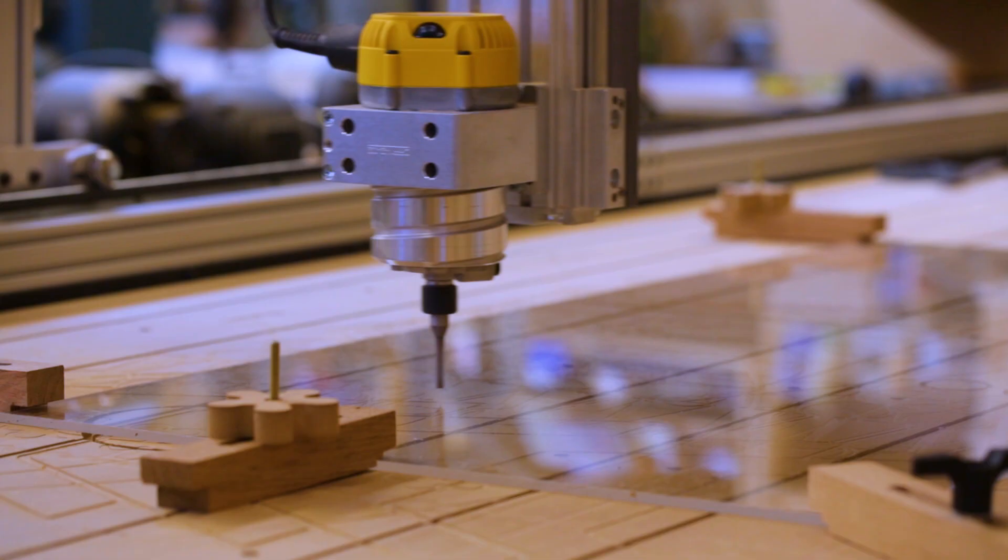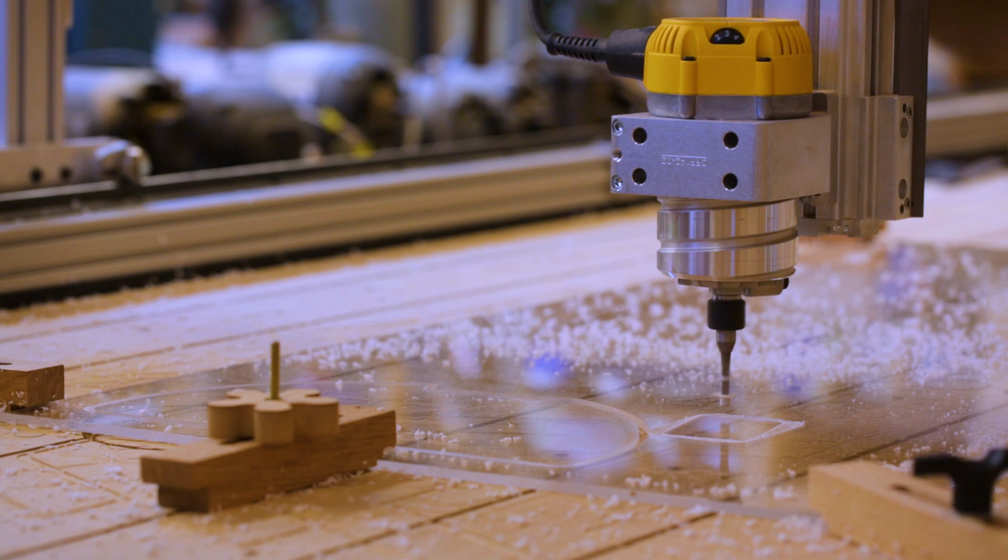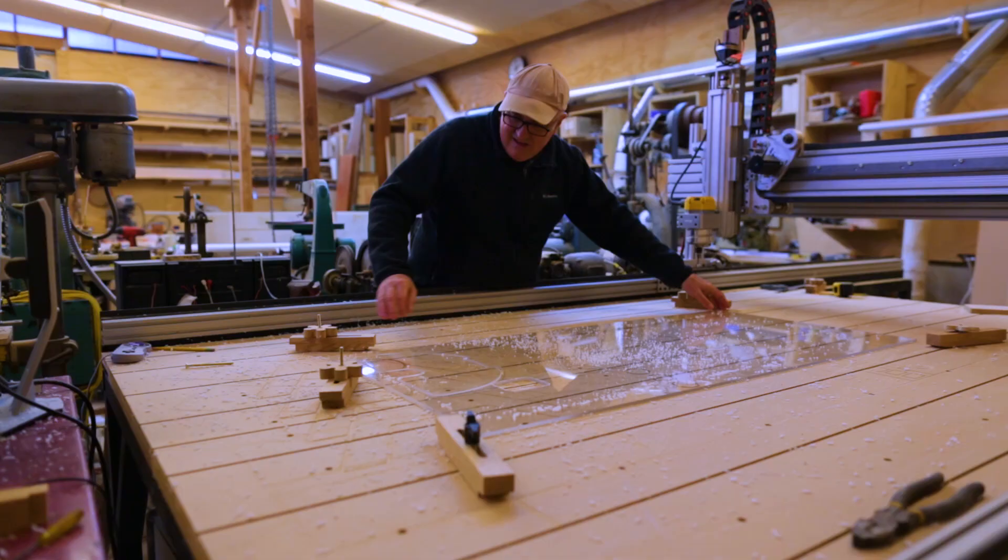Once I had everything set, I could then cut out the final piece out of plexiglass. I still haven't really mastered cutting plexiglass on the CNC. It gummed up the bit just a little bit. It worked, but it wasn't quite as good as I think it could be.